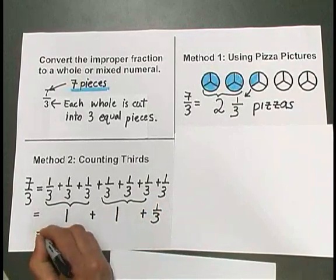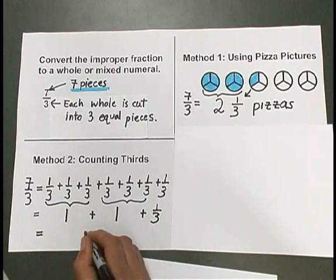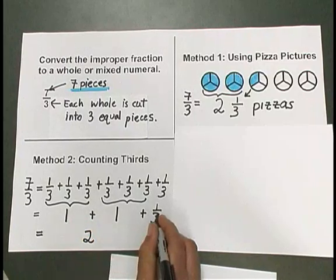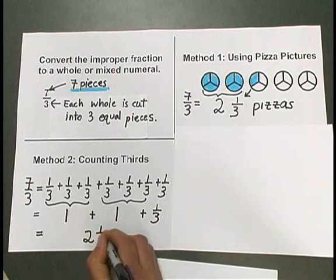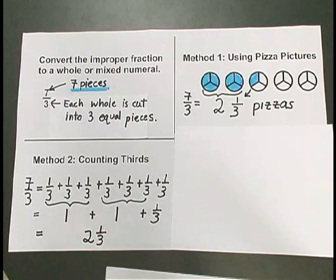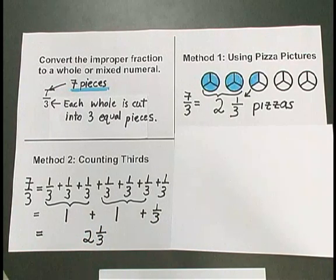All together, what we have is 1 plus 1, or 2, and 1 third. There's our mixed numeral, 2 and 1 third, that represents 7 thirds.